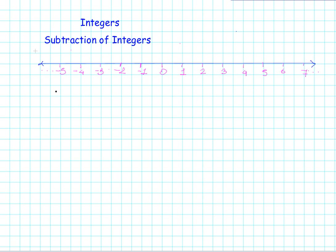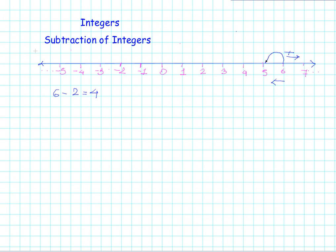Let's say I have the number 6 and I have to subtract 2 from it. I already know by definition that 6 minus 2 is 4, but let's look at it from the number line perspective. To add something to a number, you go to the right hand side. To subtract something, you go to the left hand side. So to subtract 2 from 6, I go 2 steps in the negative direction: step 1 reaches 5, step 2 reaches 4.